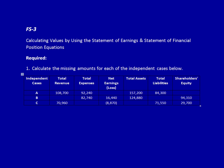We're back at it, financial statement question number 3, calculating values by using the statement of earnings and statement of financial position equations, also called the financial reporting elements. Required: calculate the missing amounts for each of the independent cases below.